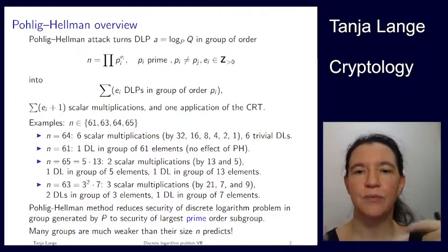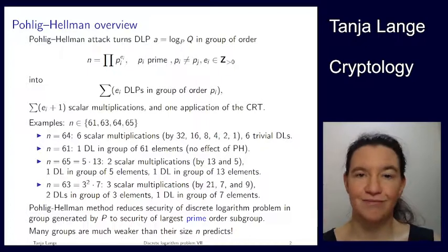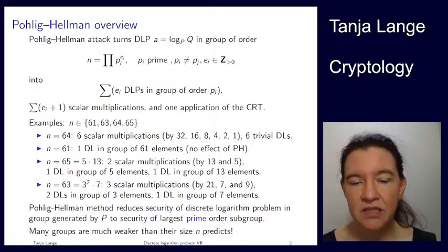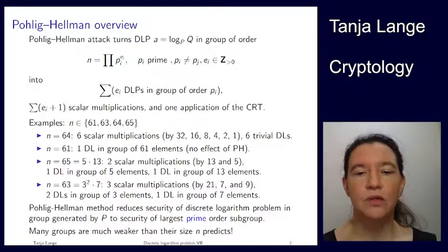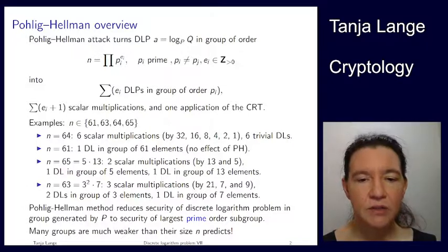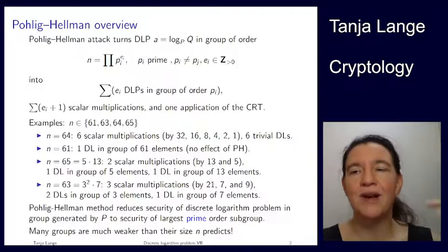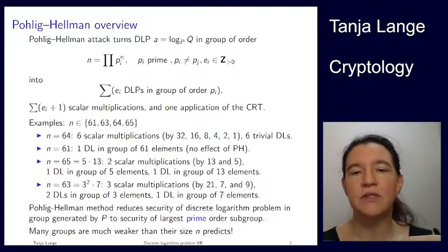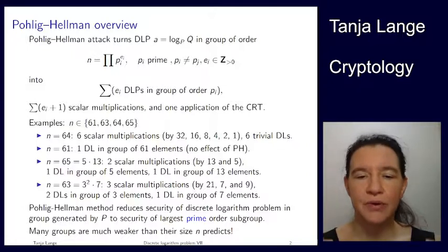But what you actually saw is just 31 steps. That's ridiculously much smaller. So the Pohlig-Hellman attack reduces the security of this discrete log to, well, what is the hardest of all of those? The hardest of all of those problems is the subgroup of prime order. So in this case, well, the 61, in this case the 13, and in this case the 7. Everything else was cheaper to do.